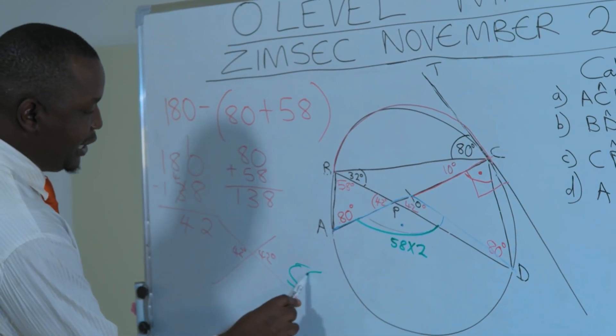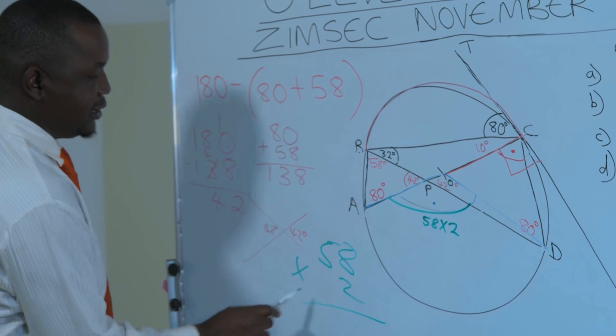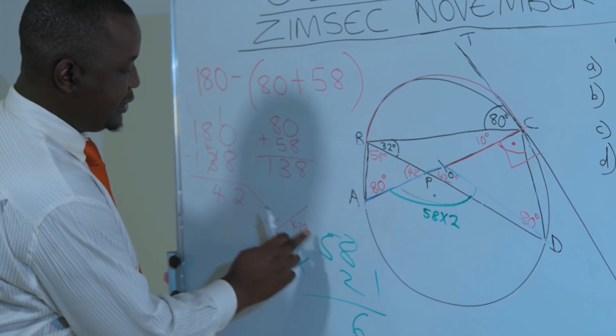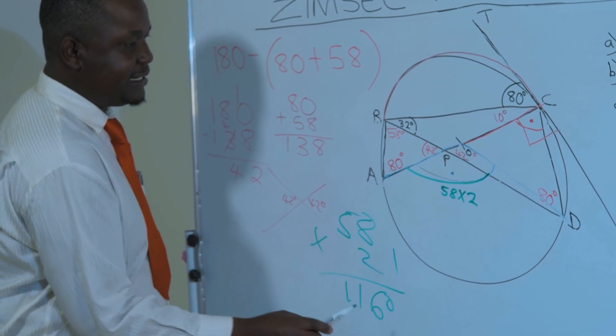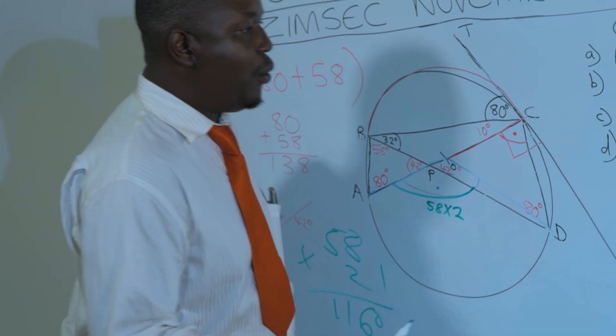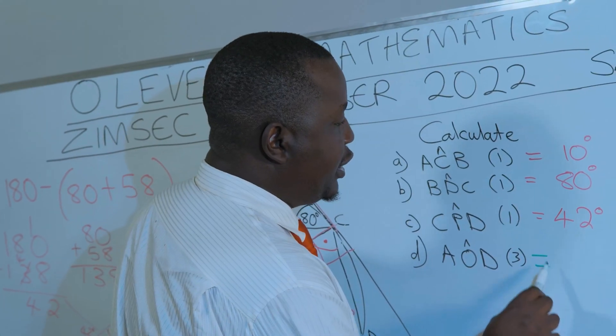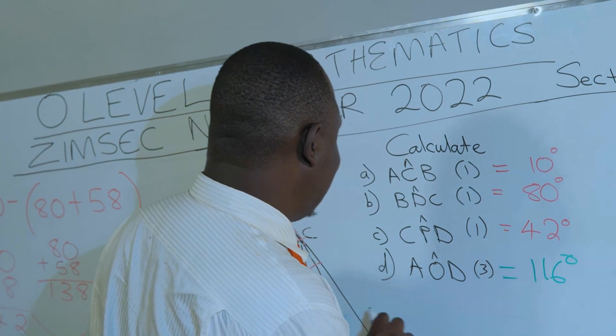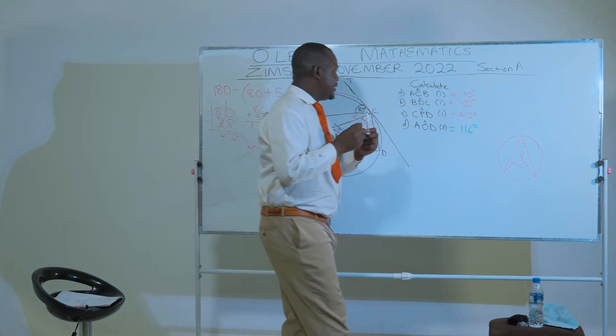So this angle here is going to be equal to 58 multiplied by 2. So 58 multiplied by 2 by calculation, 116 degrees. So angle AOD, 116 degrees.